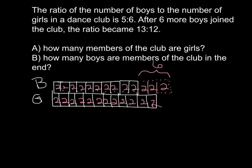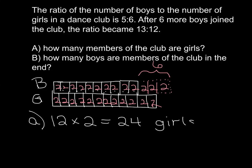Now that we've completed our bar model, we can answer the questions. Part A says how many members of the club are girls? We go to the girls' portion of the bar model — there are 12 pieces, and each piece equals 2, so 12 times 2 equals 24 girls. Part B says how many boys are members of the club in the end? There are 13 pieces and each piece equals 2, so 13 times 2 equals 26 boys.